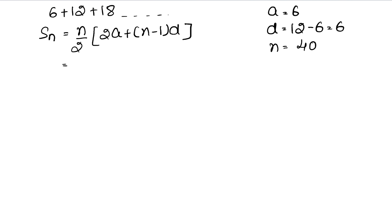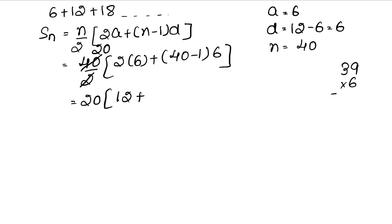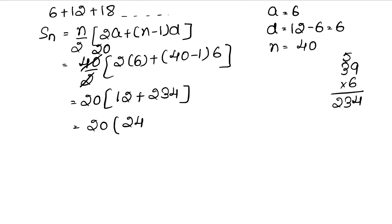So n is 40, giving us 40/2 into (2×6 + (40−1)×6). That simplifies to 20 into (12 + 39×6). Now 39×6 is 234, so we get 20 into (12 + 234) = 20 into 246, which gives us 4920. So 4920 is the answer.